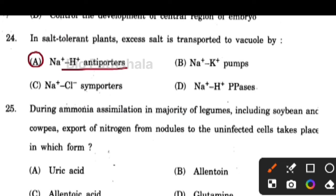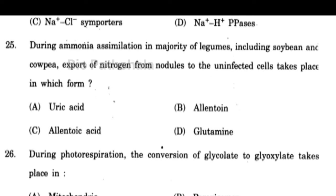Next question: in salt-tolerant plants, excess salt is transported to the vacuole by sodium-hydrogen antiporters. The difference between antiporters and symporters is that in antiporters the two molecules go in opposite directions, while in symporters they go in the same direction.